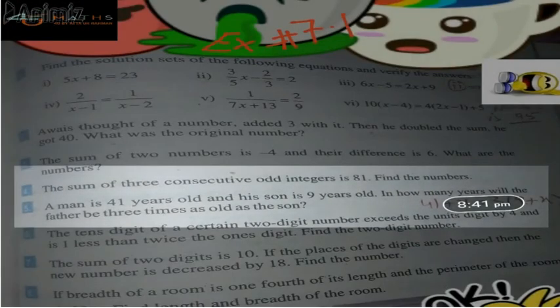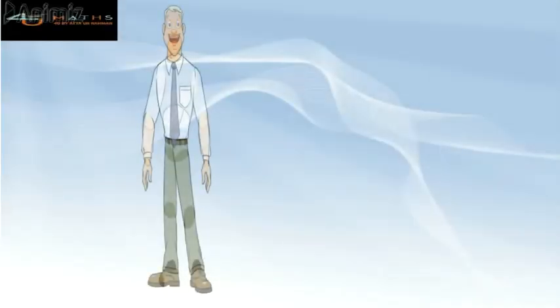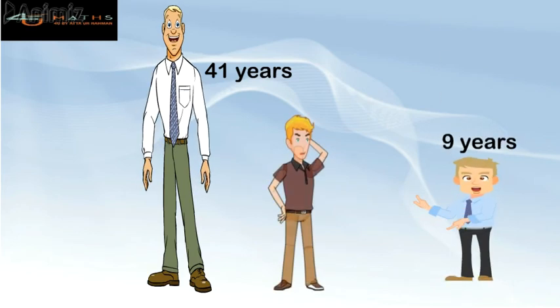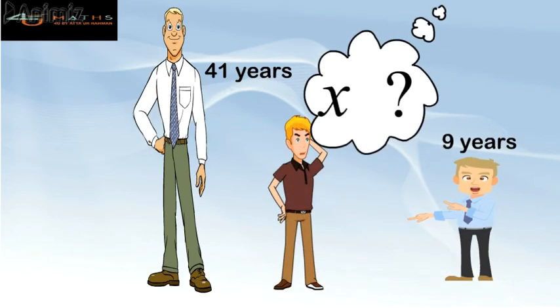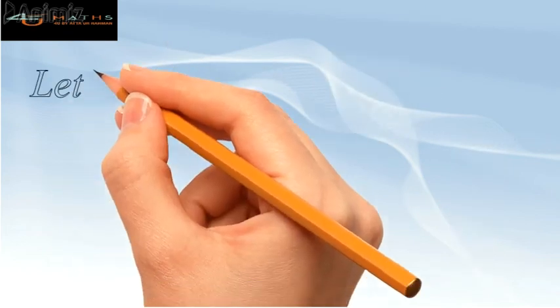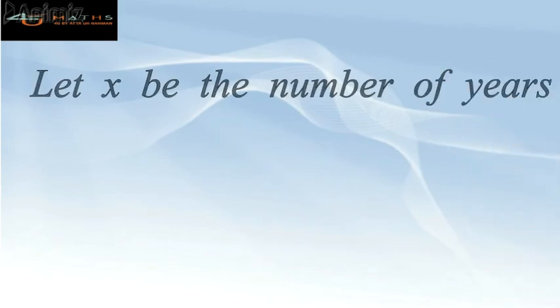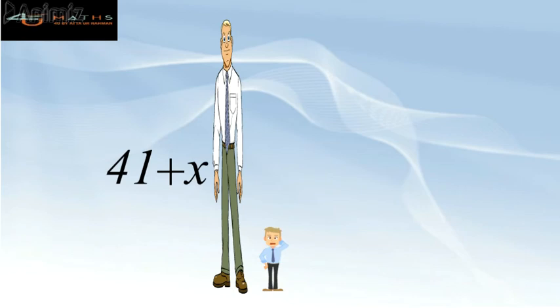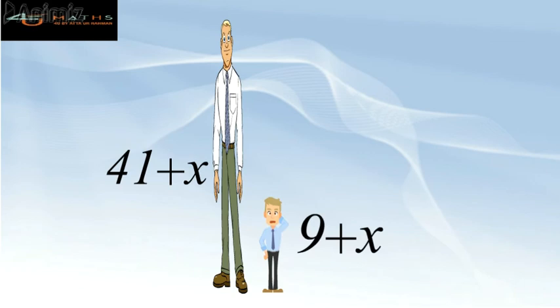Now moving toward question number 5, which says that a man is 41 years old and his son is 9 years old. In how many years will the father be 3 times as old as his son? We will let x be the number of years in which the father will be 3 times as old as his son. So after x years, the age of the father will be 41 plus x and that of the son will be 9 plus x.